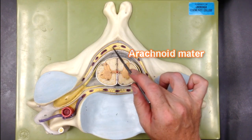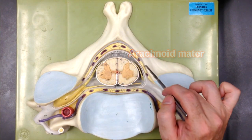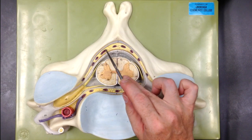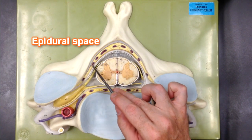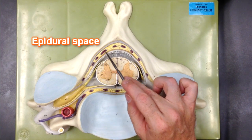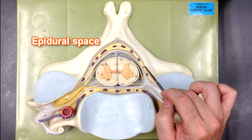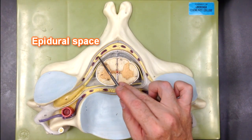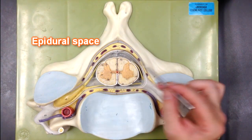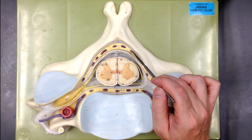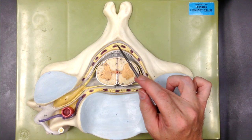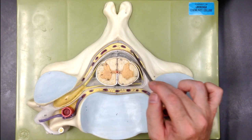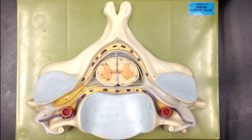On the outside of the dural sheath we can see adipose tissue right here. This is epidural fat in the epidural space, and we can see a venous plexus located in this epidural space.